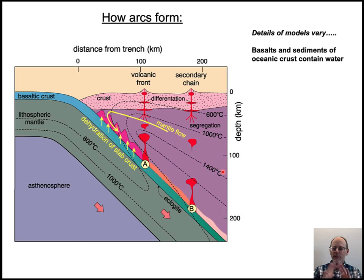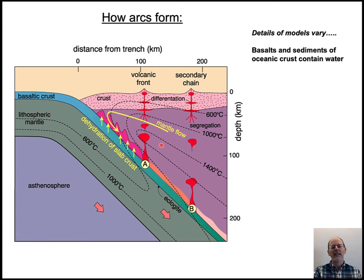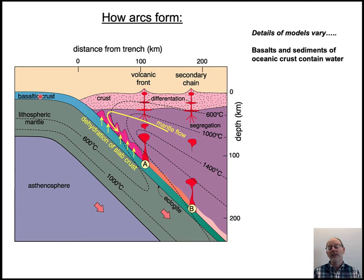A really important thing in all of this is to trace the flow of water through the system. It's the water fluxing that occurs in the mantle wedge that drives most of the melting — you need this water to decrease the melting temperature to produce the melts in the first place. The basalts and sediments contain water; sediments have water because they start out as mud. The basaltic crust and even some of the underlying mantle lithosphere becomes hydrated at the mid-ocean ridge, so they start out with hydrated minerals in them.